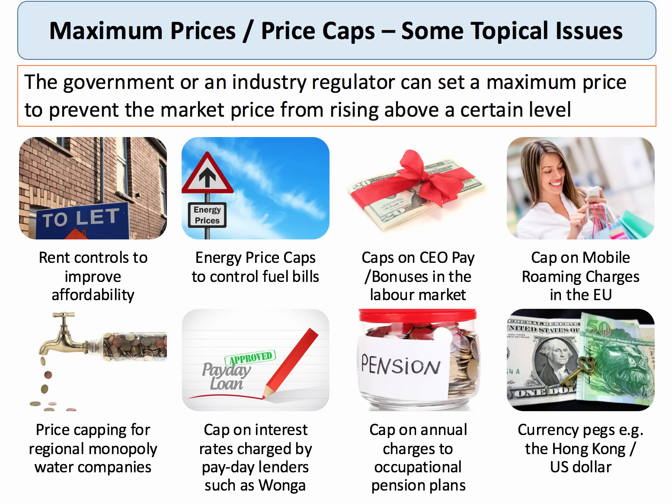There were debates about what kind of price capping formula should be used for regional water monopoly companies. A couple of years ago the Financial Conduct Authority introduced a cap on the interest rates that could be charged by payday lenders such as Wonga, capping interest rates at 0.8% per day. There are also questions about caps on occupational pension plan charges, and at the macro level countries can operate a fixed exchange rate — for example, the Hong Kong dollar is currently capped and pegged to the US dollar.